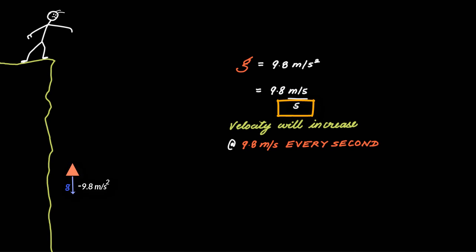And since the velocity is increasing every second, the distance covered also increases every passing second. To illustrate the idea, let us say an object is dropped from the top of a very tall building. When an object is dropped, its initial velocity is zero.